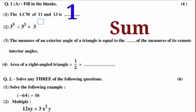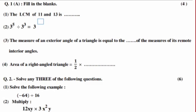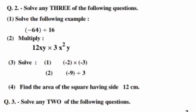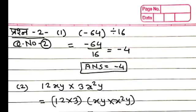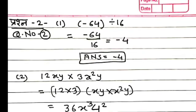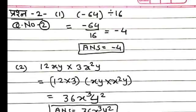Now we are going to solve the second question of this post-test bridge course. Second question: solve any 3 of the following questions. First, solve the following example: minus 64 divided by 16. Second is multiplication. Third is multiplication and division, and fourth is we have to find the area of a square having side 12 cm. First: minus 64 divided by 16 equals minus 4.